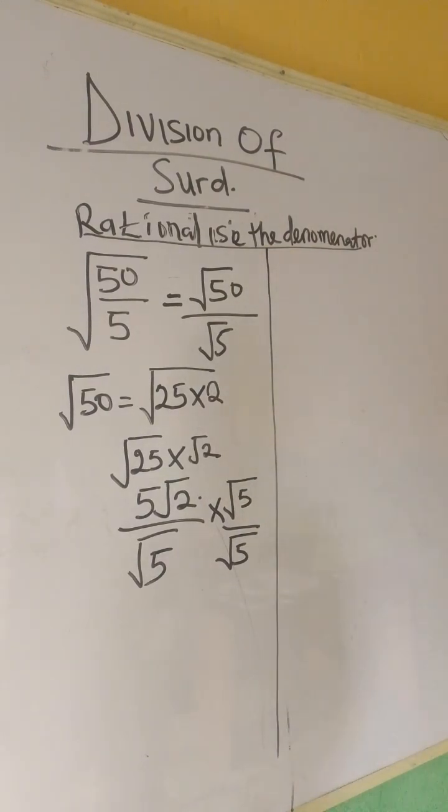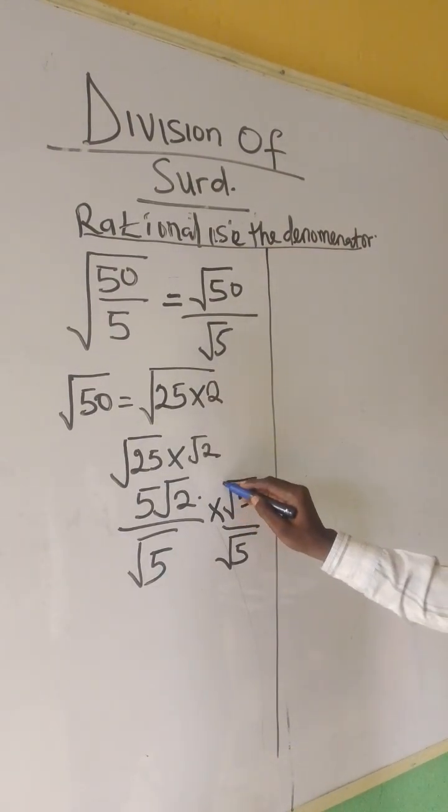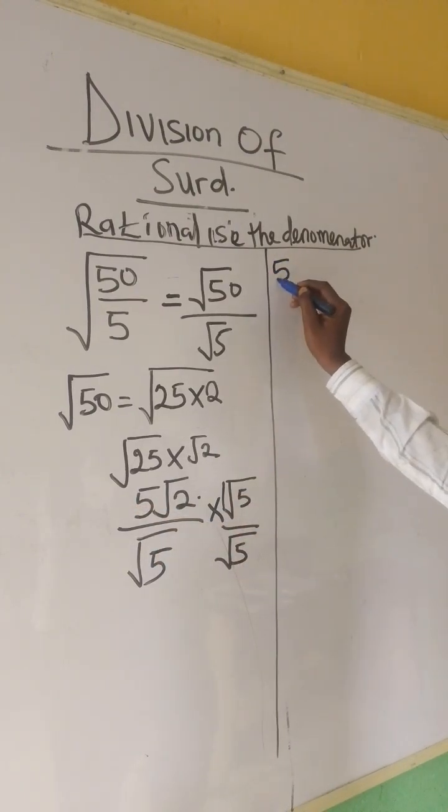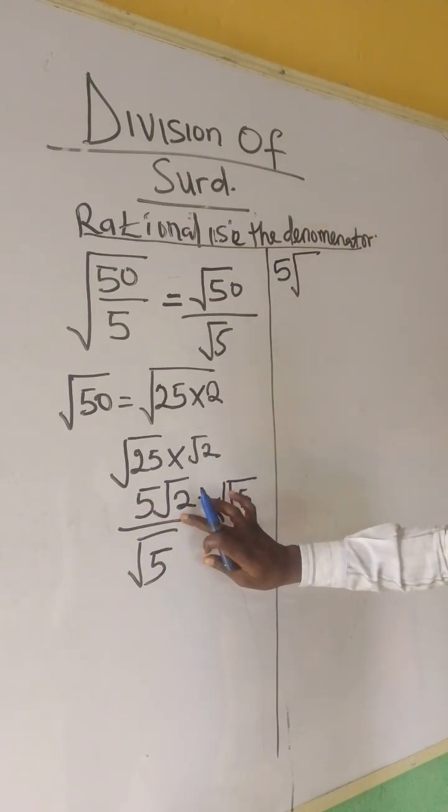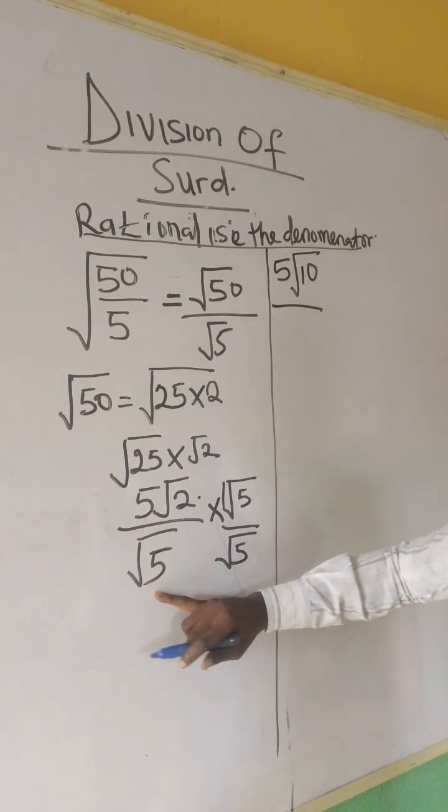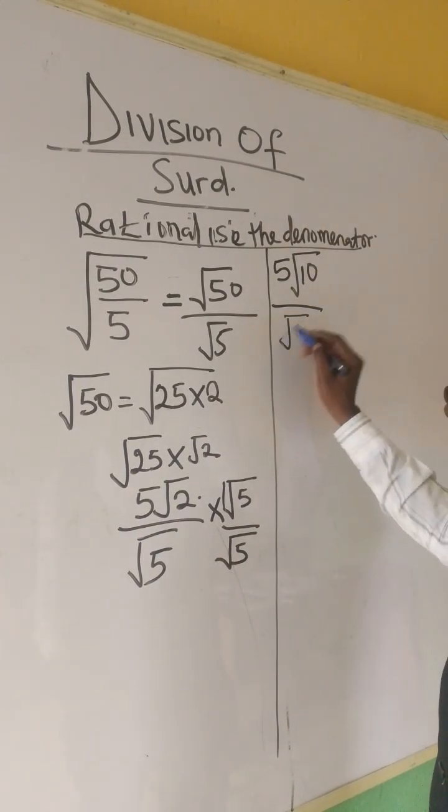Now, let's continue. We have an invisible one here. So, that means we have 5 times root 1 is 5 root 2 times root 5 will give us root 10 over root 5 times root 5 will give us root 25.